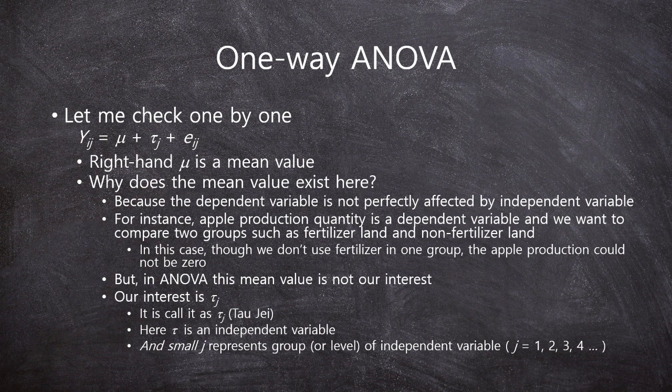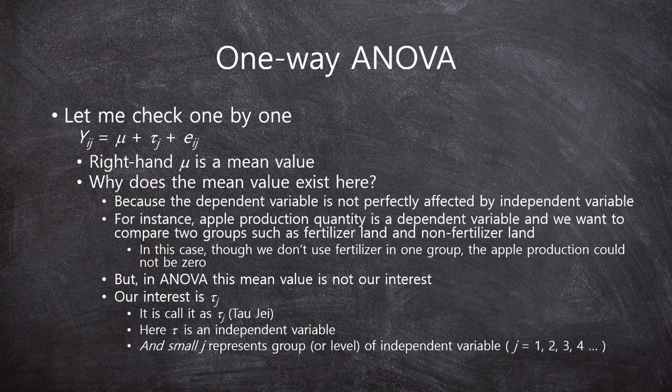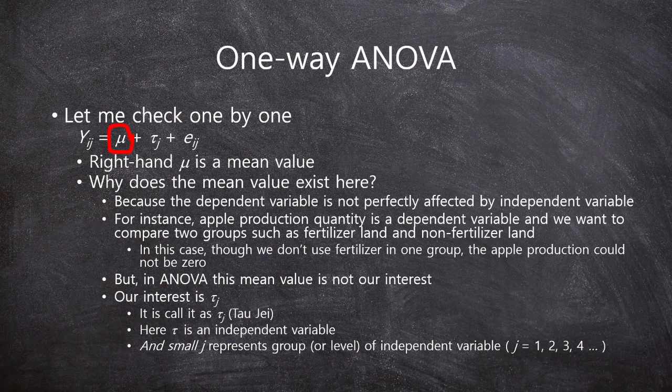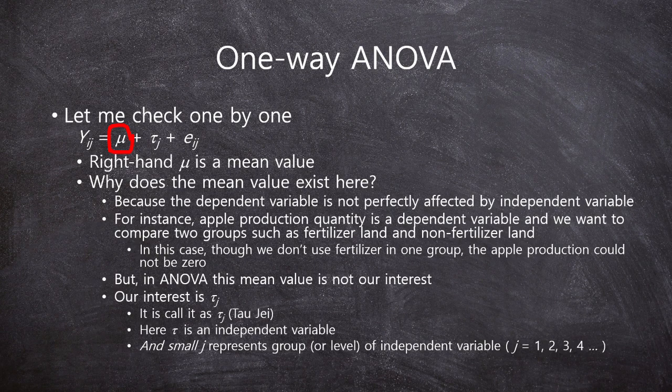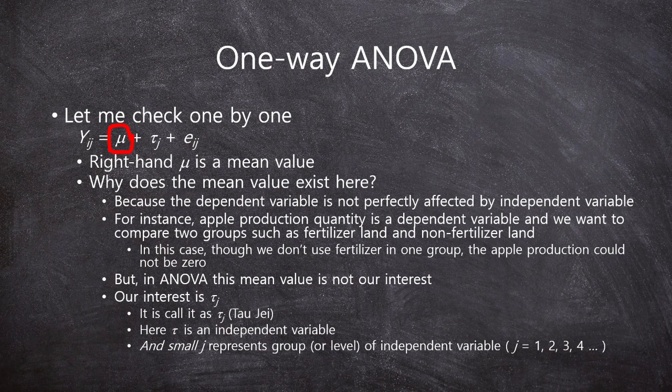Let me check one by one. First, we are looking at the right hand, right side, the first character. How do you call this character? No. This is mu. Mu. This is a Greek character mu. In statistics, the mu means mean, average. Why does the mean value exist here?